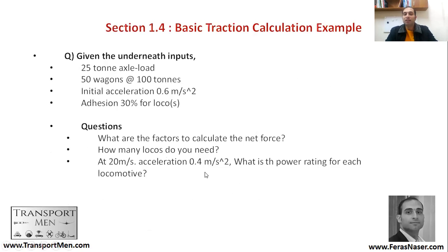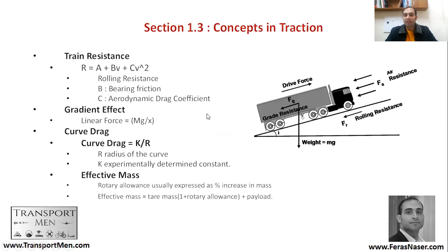Now let's look at tractive effort in detail. Consider a truck — the same calculation applies to a train with a drive force, which is the tractive effort. That force is resisted by air resistance and rolling resistance. To calculate the net resistance force: it equals a constant A, plus B times V (where B is the bearing friction multiplied by velocity), plus C times V squared (where C is the aerodynamic drag coefficient). This allows you to calculate the resistance force.